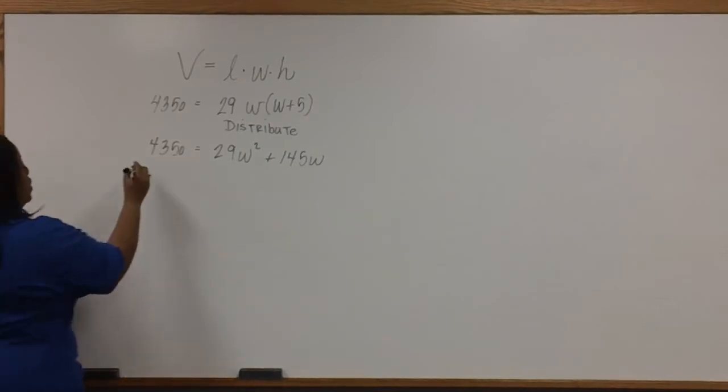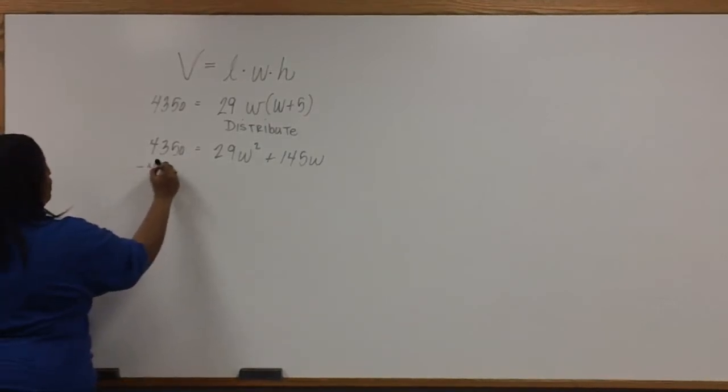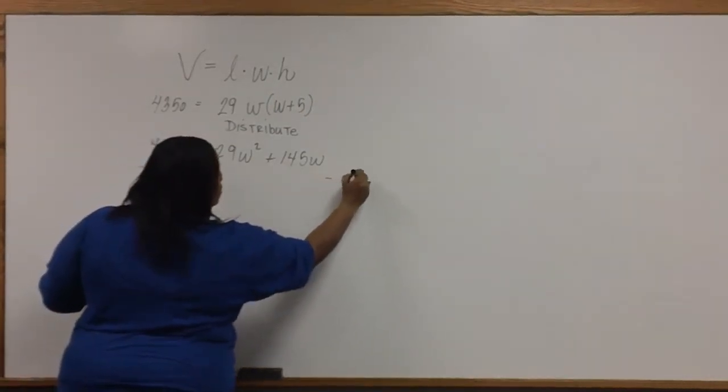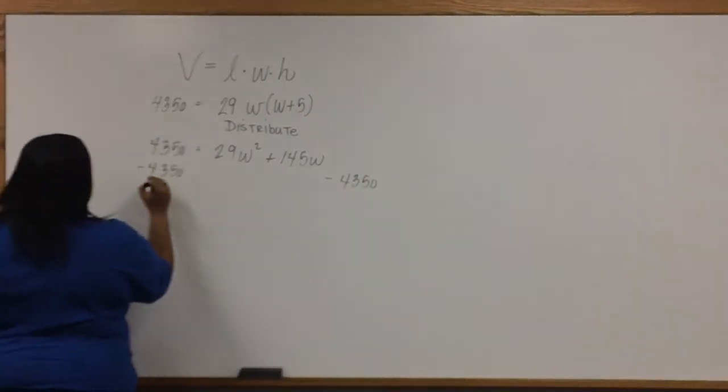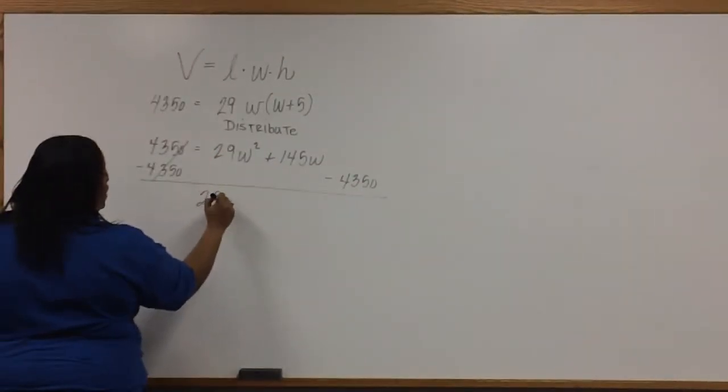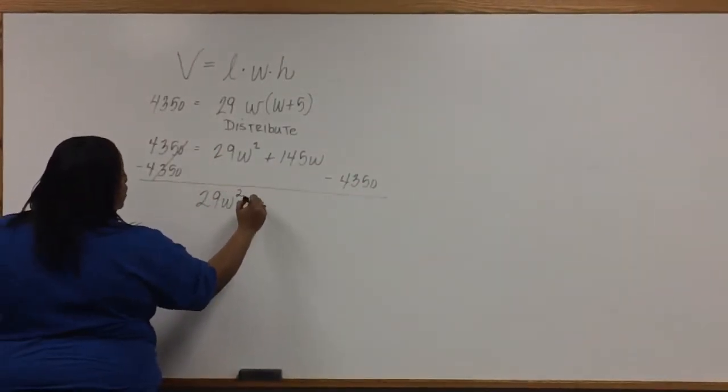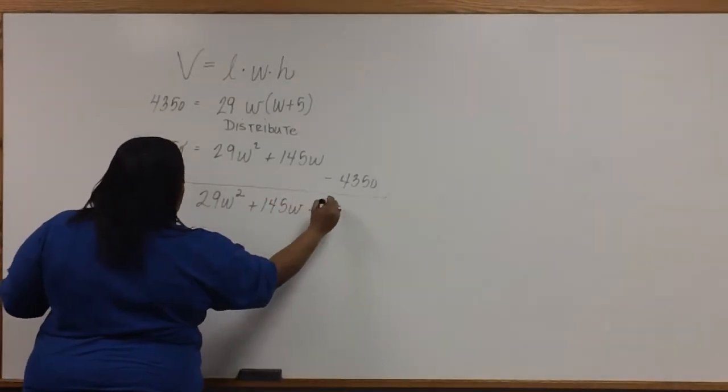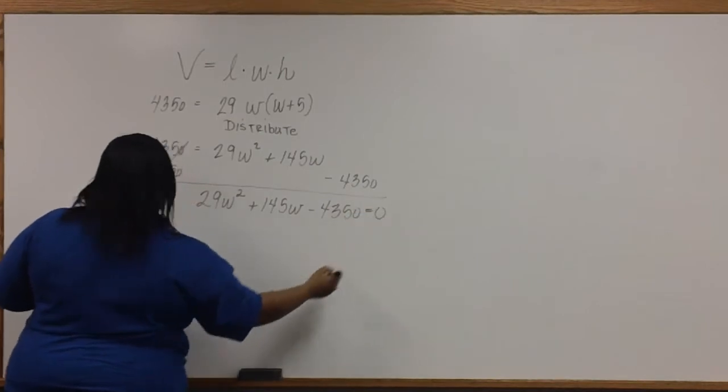To set it equal to zero, we'll subtract 4350 from both sides of the equation. Now we have 29W squared plus 145W minus 4350 equals zero.